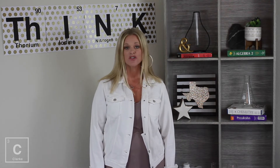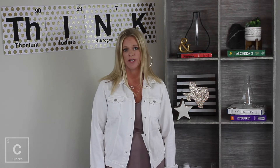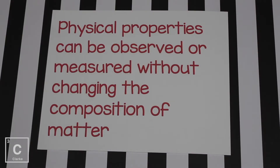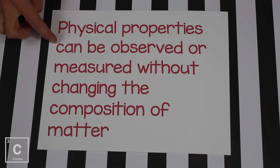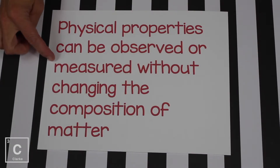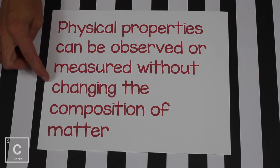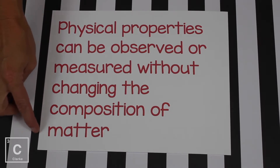First, let's grab that definition for a physical property. Physical properties can be observed or measured without changing the composition of matter. So you can see physical properties are characteristics of a compound. If you can use your five senses, that's a physical property.